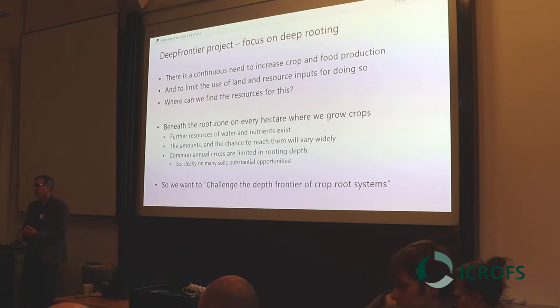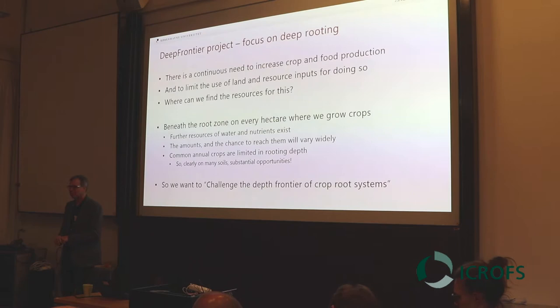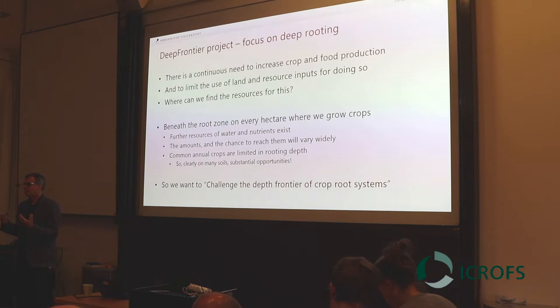Some of the reasons why the project is as it is. When you work with anything related to crop production, there's a continuous need to increase food production around the world. There's also a continuous need to limit the amount of land we put into it and the amount of resources we put into it. So where can we try to find more resources that can be used for crop production and to increase crop production in a sustainable way?